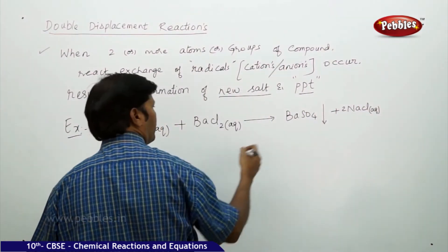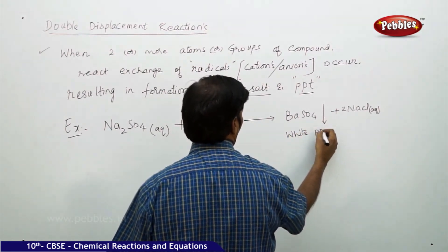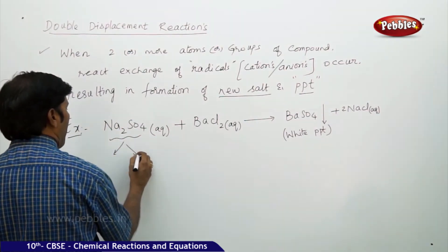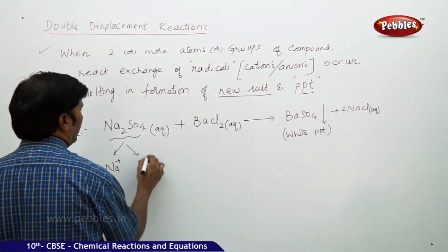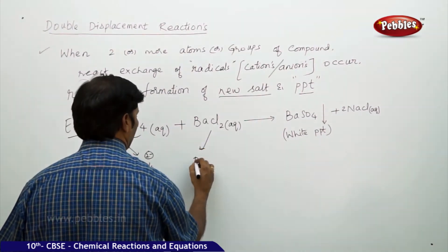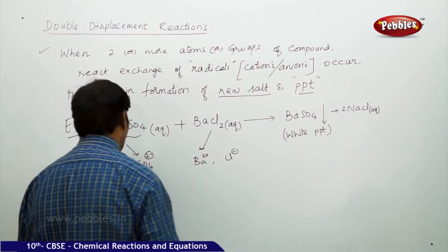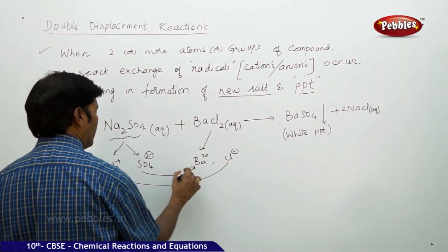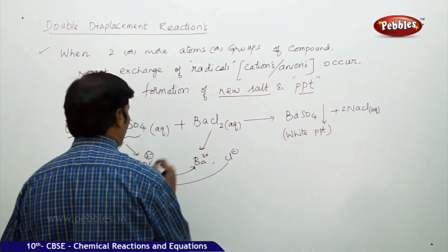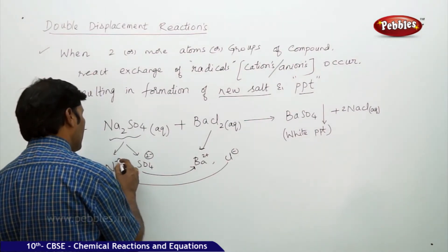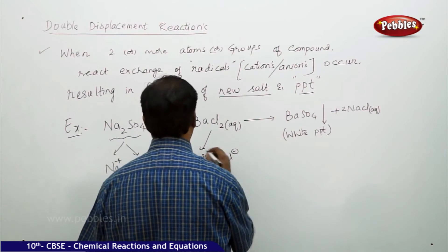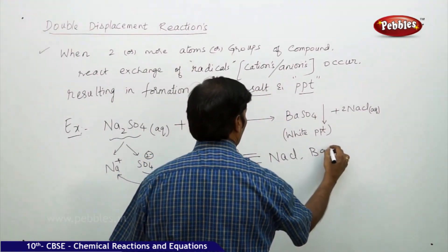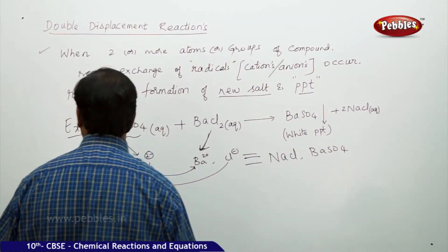Barium sulphate is a white precipitate. Sodium sulphate contains Na⁺ and SO₄²⁻ ions, and barium chloride contains one barium ion and one chloride ion. There is an exchange of radicals taking place — the sulphate anion exchanges with the chloride — resulting in the formation of sodium chloride and barium sulphate. This is called a double displacement reaction or exchange reaction.